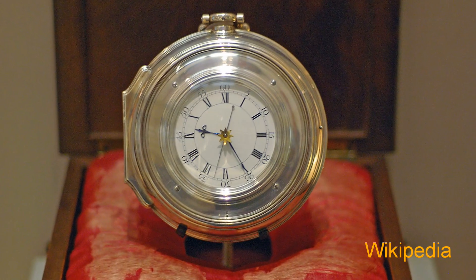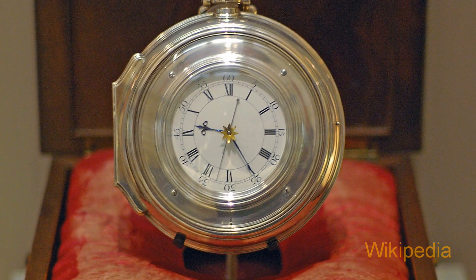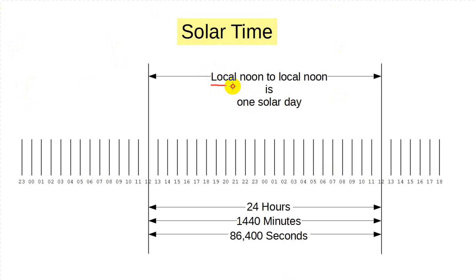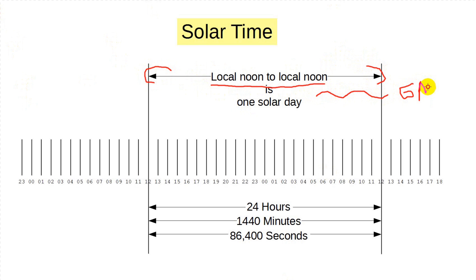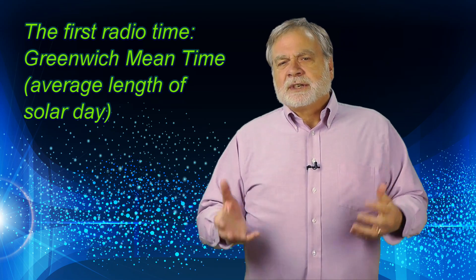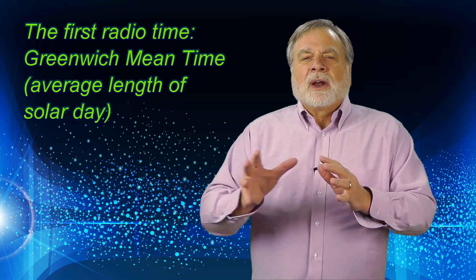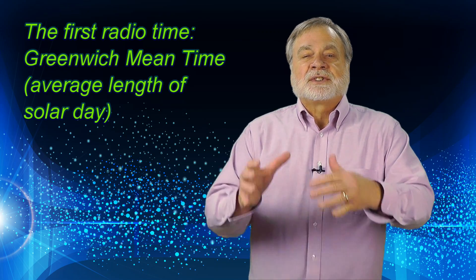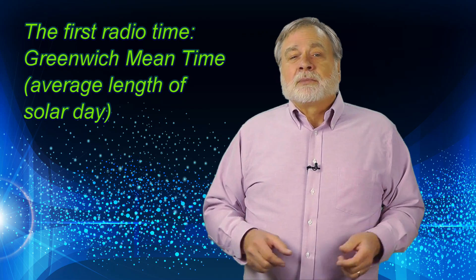With the advent of highly accurate timepieces called chronometers, the astronomers at the Greenwich Observatory noted that the length of each day — defined as from noon to noon — varied a little bit. So they developed what they called Greenwich Mean Time, or GMT, to average all this out. Tiny adjustments were made to GMT from time to time to keep it in step with the earth's rotation. So here was the first radio time: Greenwich Mean Time, or GMT. Given the worldwide telegraph and radio networks, this time was easy to synchronize everywhere, and it served that purpose for many years.